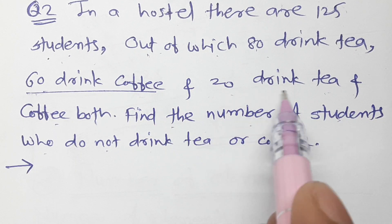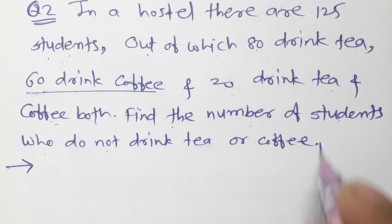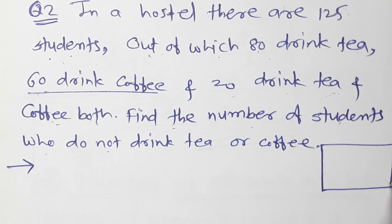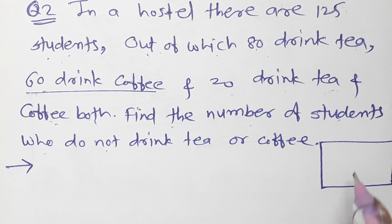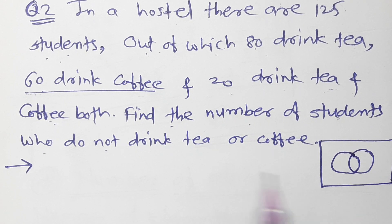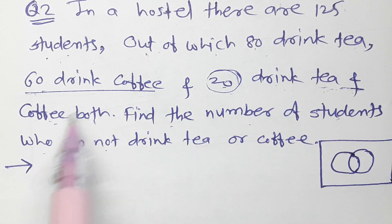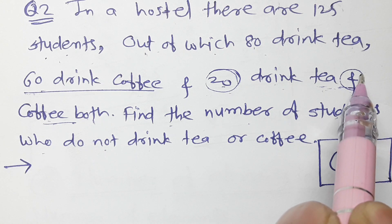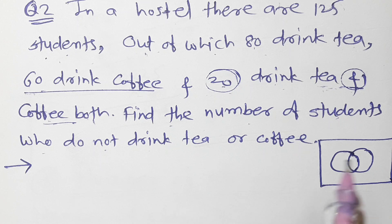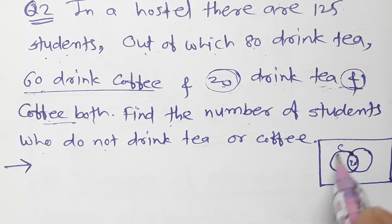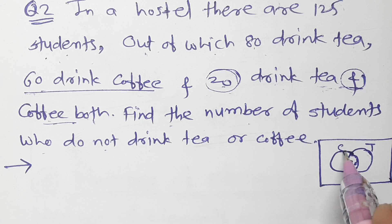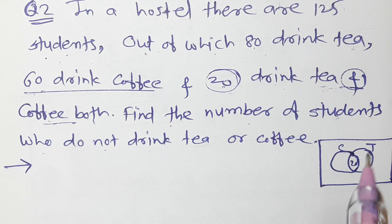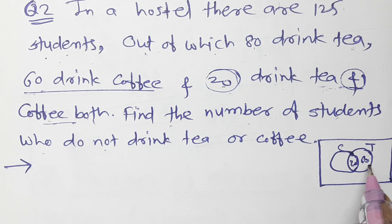There are 125 students in the hostel. 80 drink tea, 60 drink coffee, and 20 drink both tea and coffee. If we draw a Venn diagram first, we will explain it, and then we will solve it using the formula. The common students — those who drink both tea and coffee — are 20, placed in the intersection.